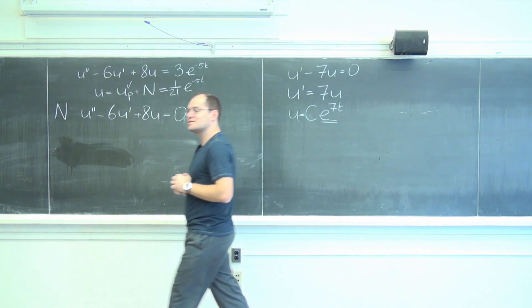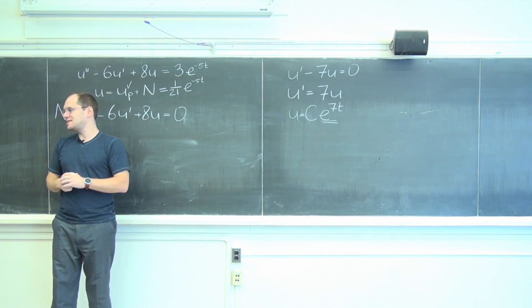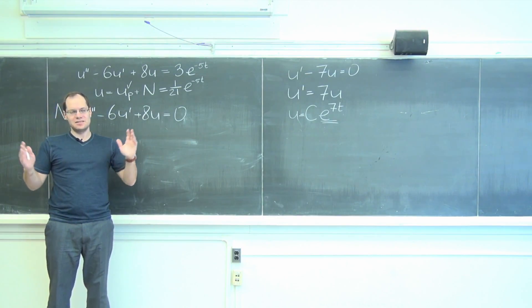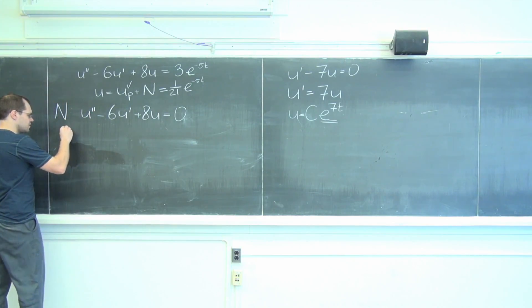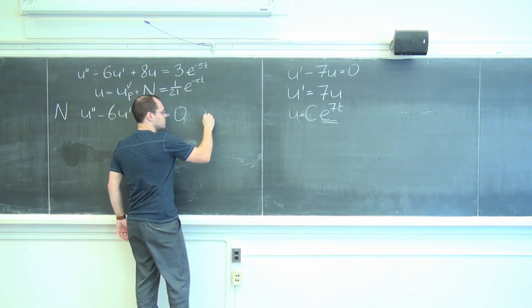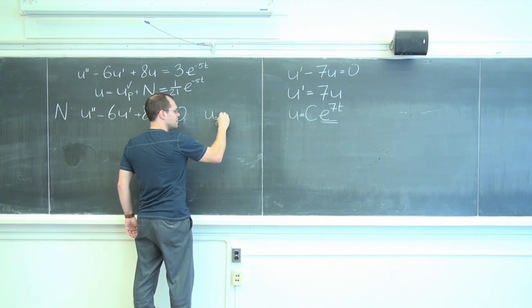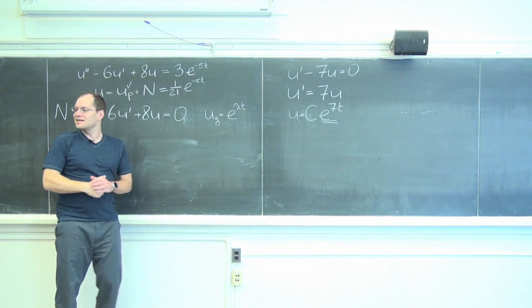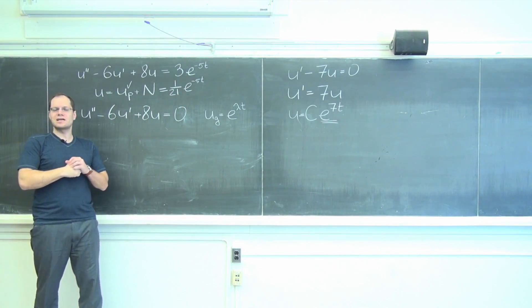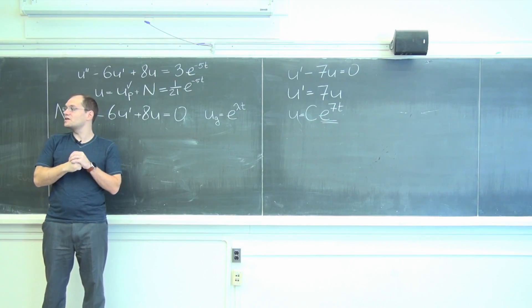We're now pursuing the null space, so we have to solve the homogenized equation. My guess will be e to lambda t—not 5t, not 7t, I don't know what it will be. u sub guess equals e to lambda t. When you hear the letter lambda, what concept do you usually think of?